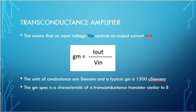The units of conductance are Siemens and a typical conductance is 1500 microsiemens. The conductance spec is a characteristic of a transconductance transistor similar to beta. We had beta in the transistor, like the 2N3904 with beta of 100. In a JFET or transconductance amplifier, they'll have a conductance spec like 1500 microsiemens.